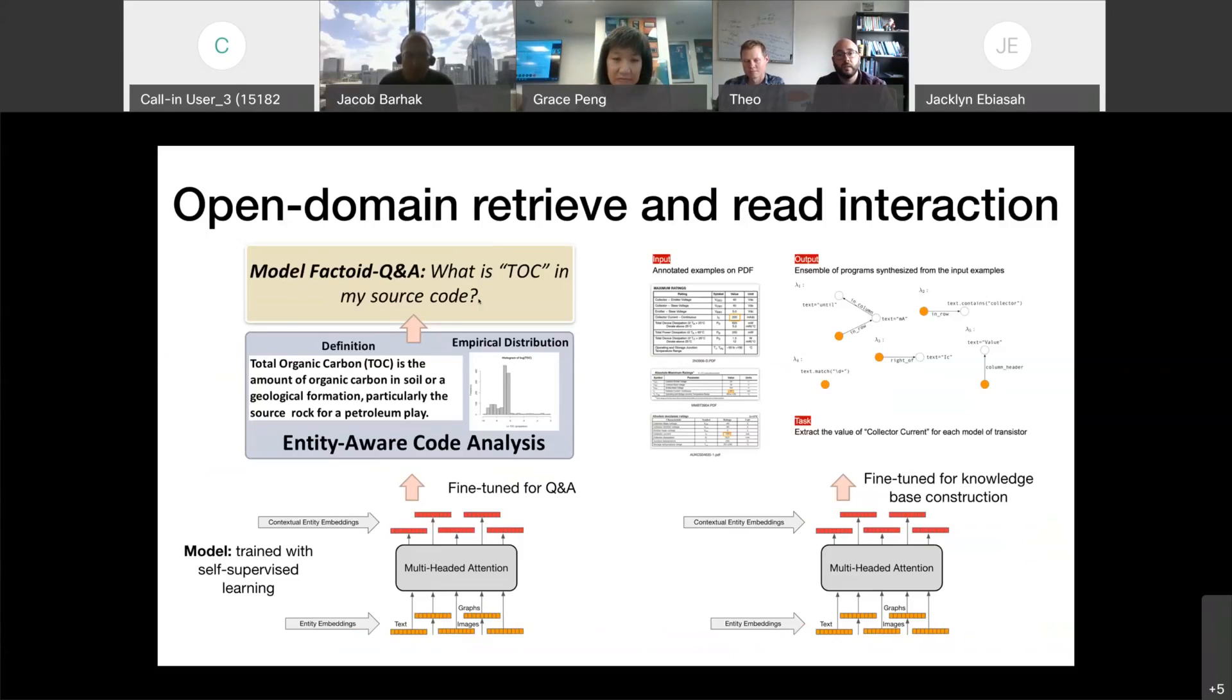Another product that Cosmos is offering, exactly by using the same model and fine-tuning it for that purpose, is that of automated knowledge-based construction. Users can provide a few annotated examples directly on the PDFs, and Cosmos, by using the representations learned in this unified context-based embedding, will actually automatically augment and enrich an existing knowledge base.